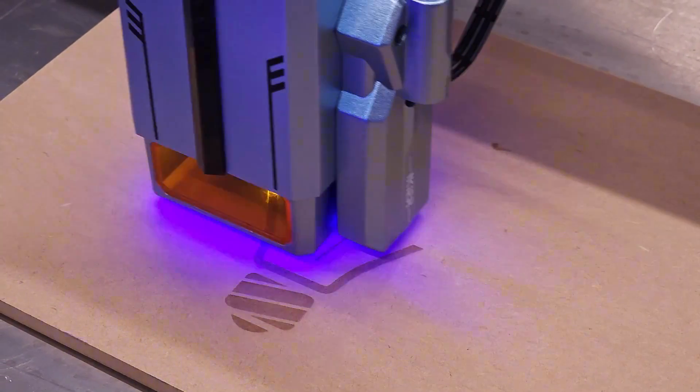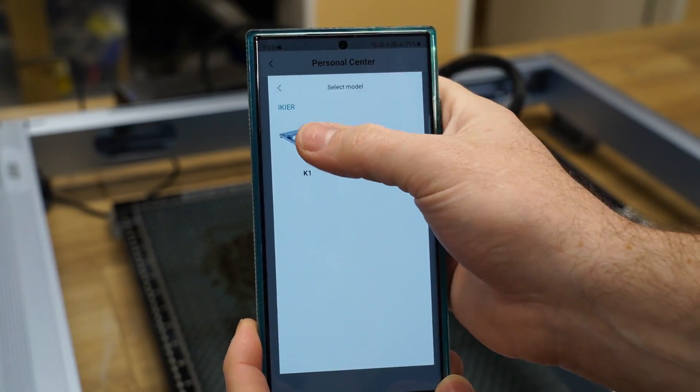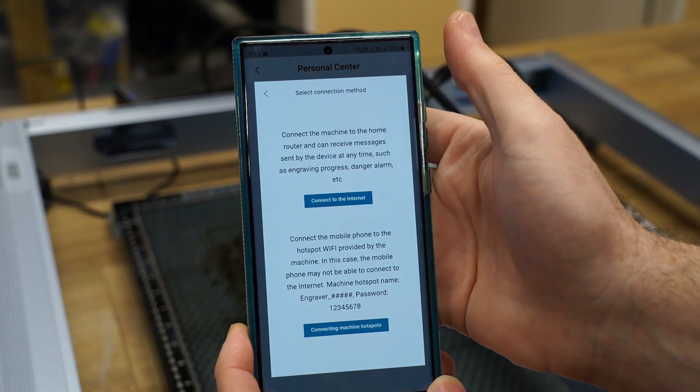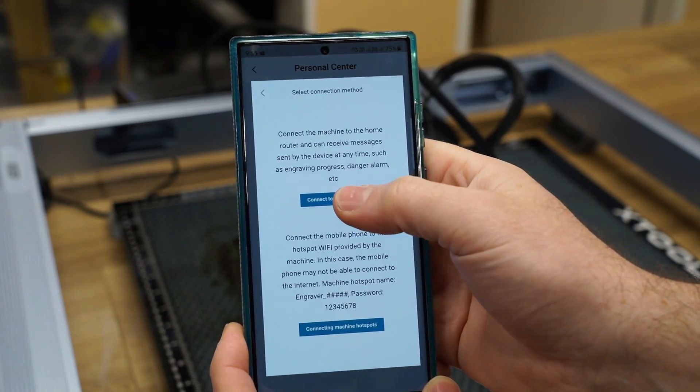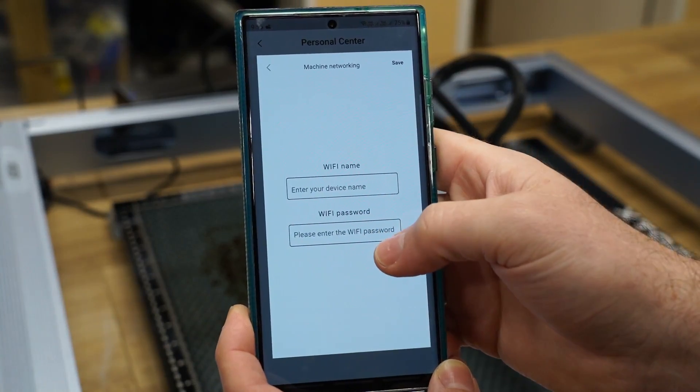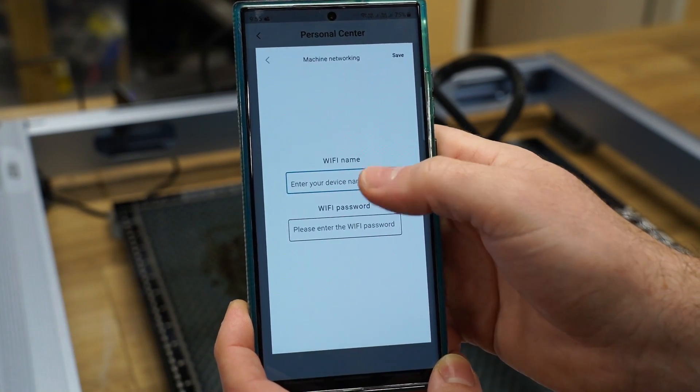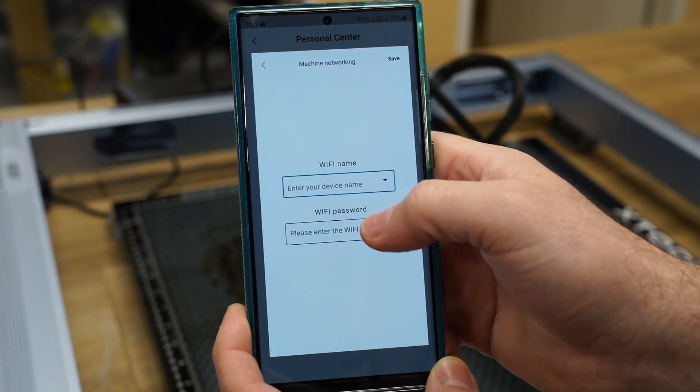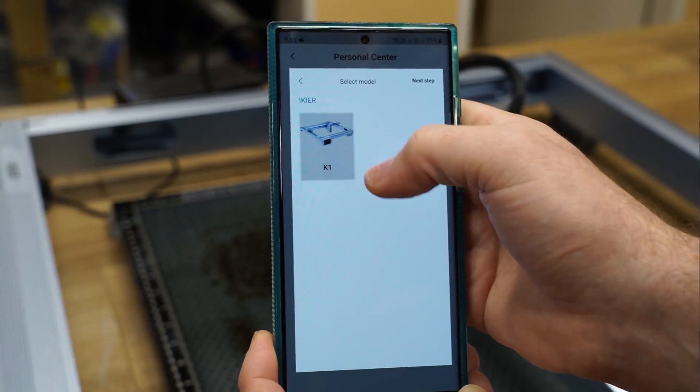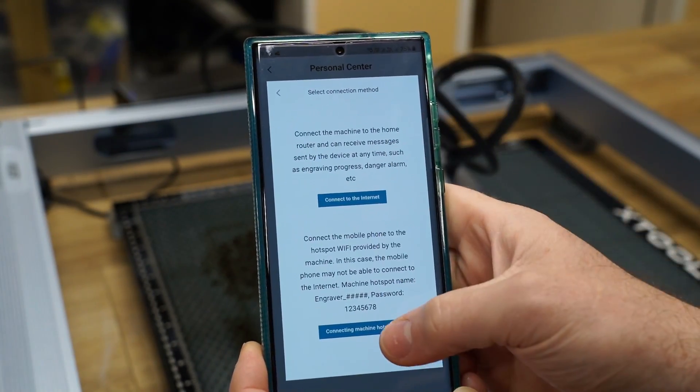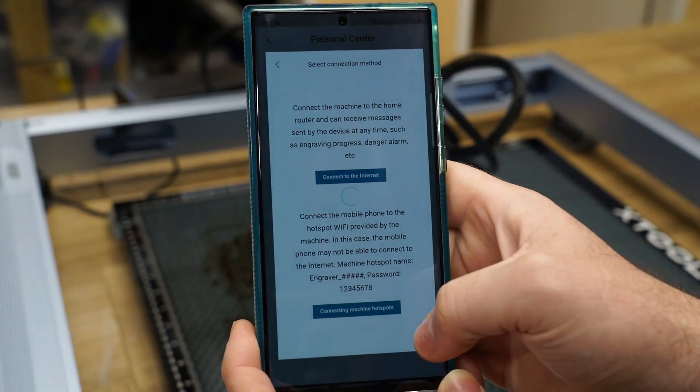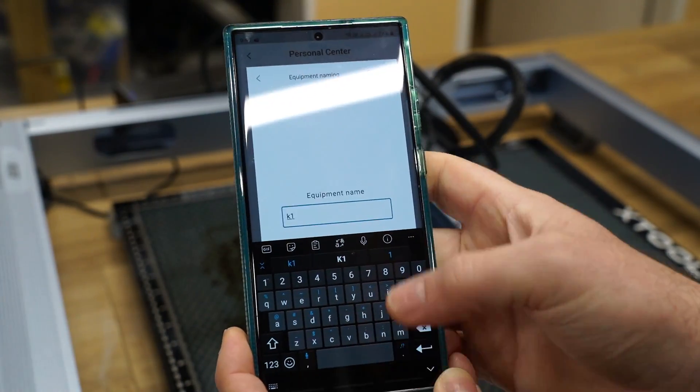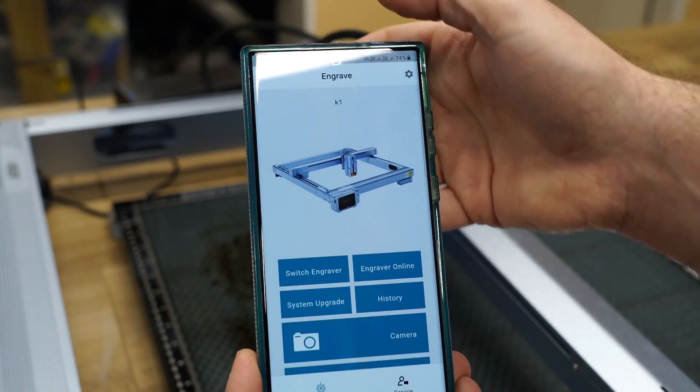The only technical bug I found was in the smartphone application. When I attempted to connect the K1 to my WiFi network, the app prevented me from selecting a WiFi network. So I was never able to connect the K1 to my WiFi network. However, I could still use the app in WiFi direct mode. So it's no biggie. And I'd like to imagine this bug could be patched in a future update.